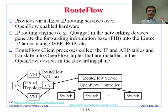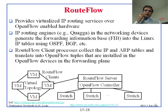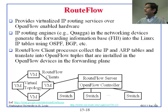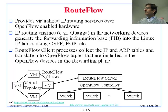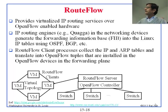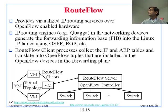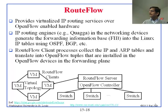RouteFlow is an extension that allows you to do routing. OpenFlow is generally layer two stuff, but if you want to do routing over that infrastructure, you can use RouteFlow. RouteFlow takes your virtual topology — you say you want one router here, one router there — and those routers are VMs. They are connected by whatever method you want. Generally you will be running Quagga on them because they are routers, so they run OSPF, BGP, or whatever, and they give that information to the RouteFlow server. The RouteFlow server then programs the OpenFlow switches to implement that forwarding.